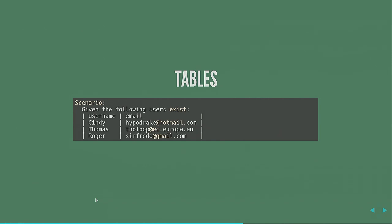Behat also has the concept of tables. This looks similar to scenario outlines but without the 'Examples' keyword — it's used to create multiple entities at the start of a test. You can say 'Given the following users exist' and provide a pipe-delimited table with all the users — maybe 20 users to check an overview. The code iterates over that, creates all the users for you, and at the end of the test cleans them up again. It's a really nice way of doing that.